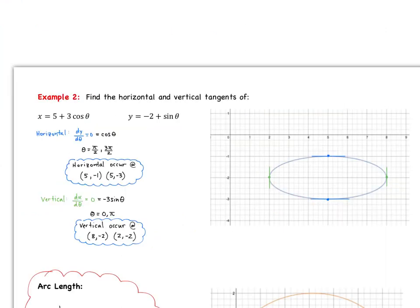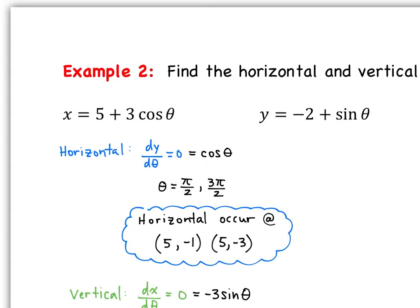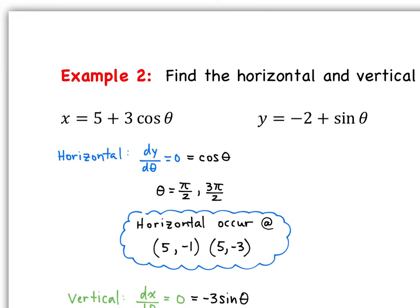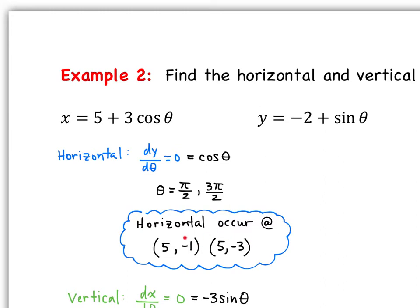Example 2 asks us to find horizontal and vertical tangents for x = 5 + 3cos(θ) and y = −2 + sin(θ). For horizontal tangents, we set dy/dθ = 0. Taking the derivative gives dy/dθ = cos(θ). Setting cos(θ) = 0 and solving, θ = π/2 or θ = 3π/2.